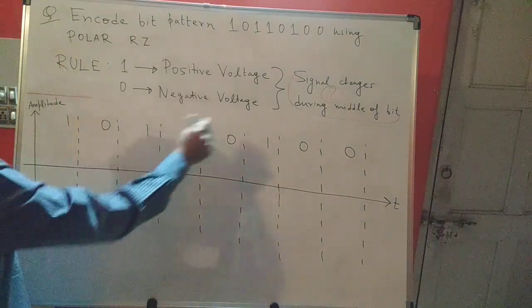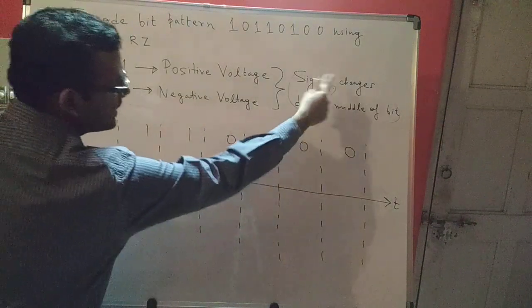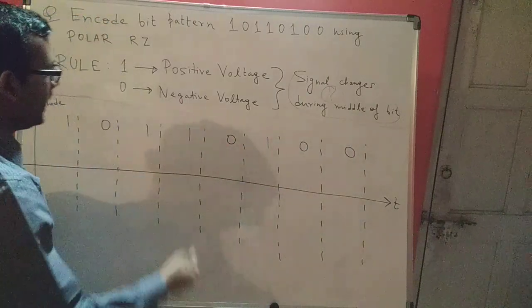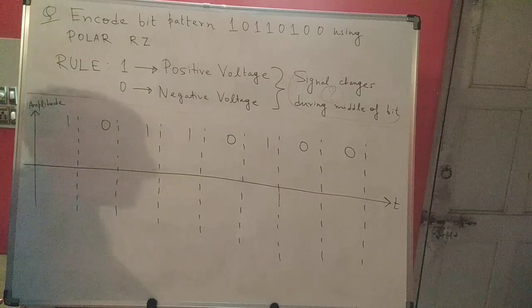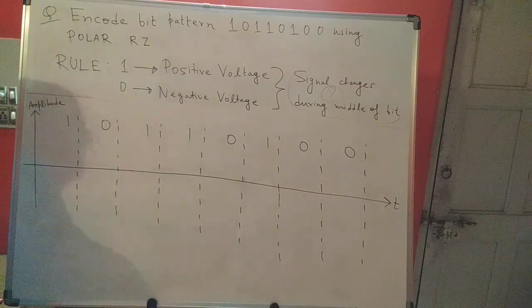But here what we'll see is we'll apply this rule and keep this constraint in mind and encode the given bit pattern into the corresponding signal using polar RZ technique.